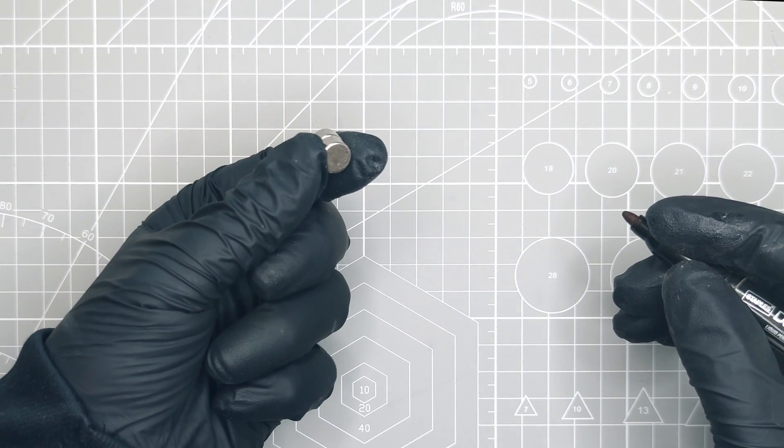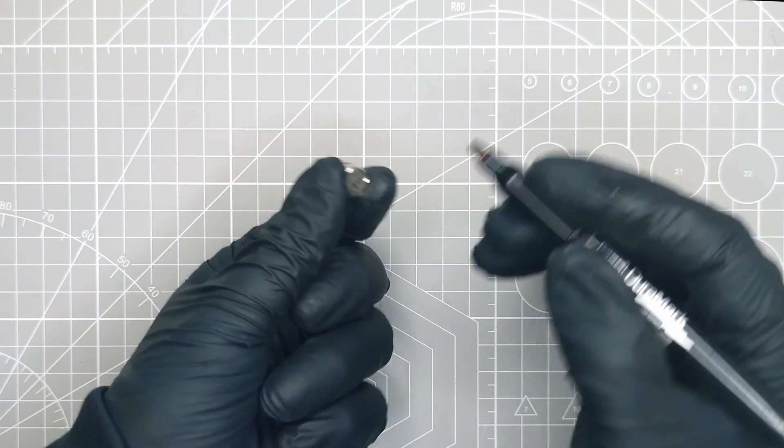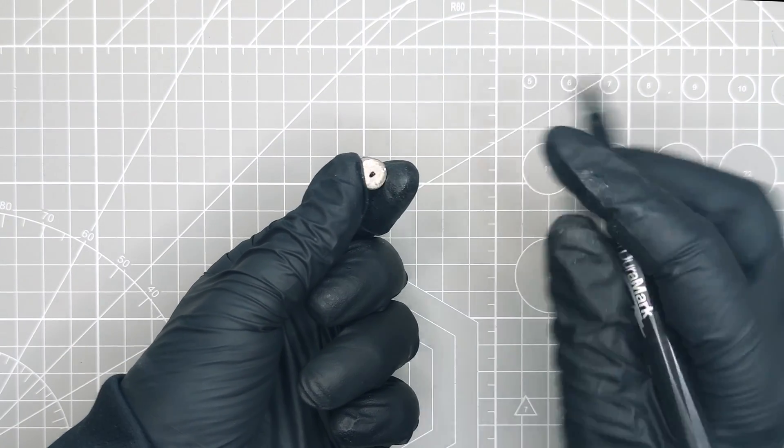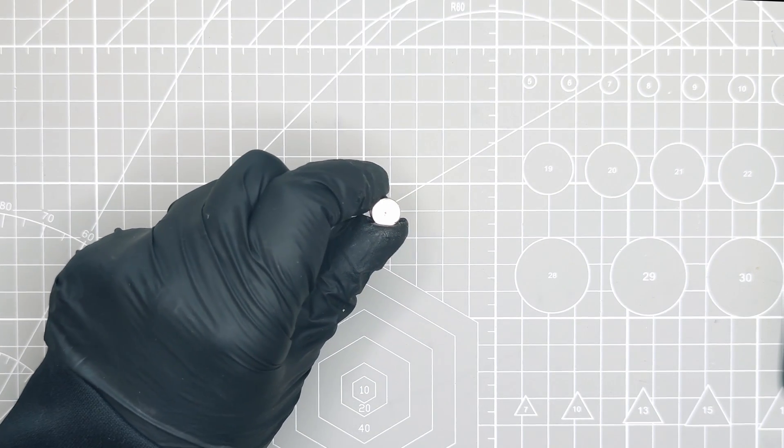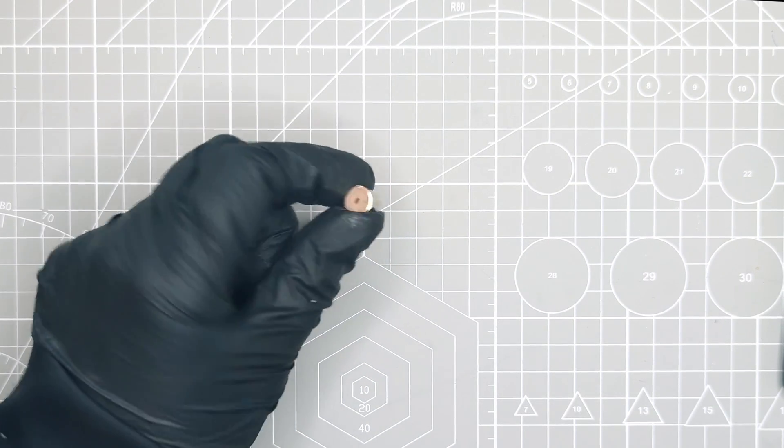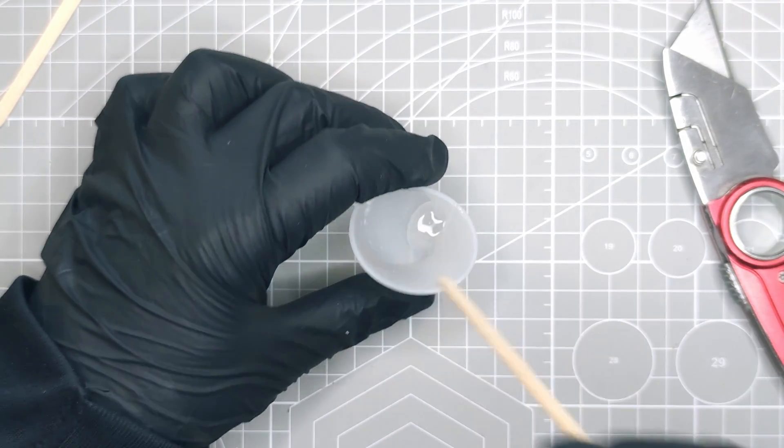Before installing the two magnets, I will mark them to make sure I attach them in the correct orientation. I simply stick them together and mark a temporary dot on each side. Now, I know that the two sides without a dot need to be in contact on the final assembly. I will use 5-minute epoxy resin to attach the two magnets to the printed parts.